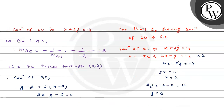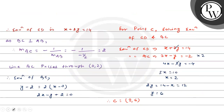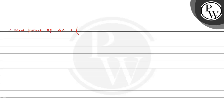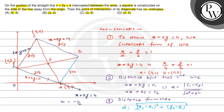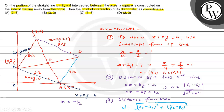The diagonals of a square bisect each other at their midpoint. So we find the midpoint of diagonal AC, where A is (4,0) and C is (2,6). Midpoint of AC equals ((2 plus 4) by 2, (6 plus 0) by 2), which equals (3, 3). This is the required answer. The most appropriate option is option C, which is (3,3). Hope you understood it well. Best of luck.